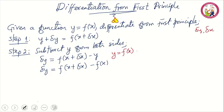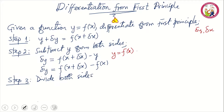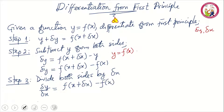The next step, step three, is to divide both sides by delta x. So we have delta y over delta x equal to f of x plus delta x minus f of x, all over delta x.